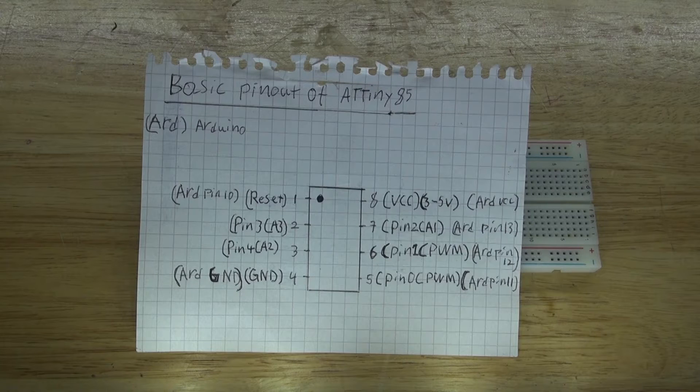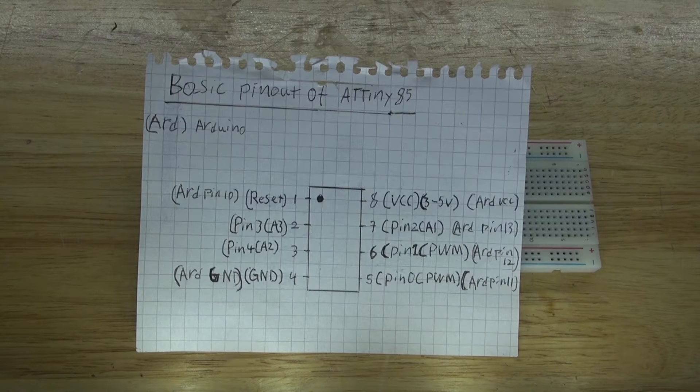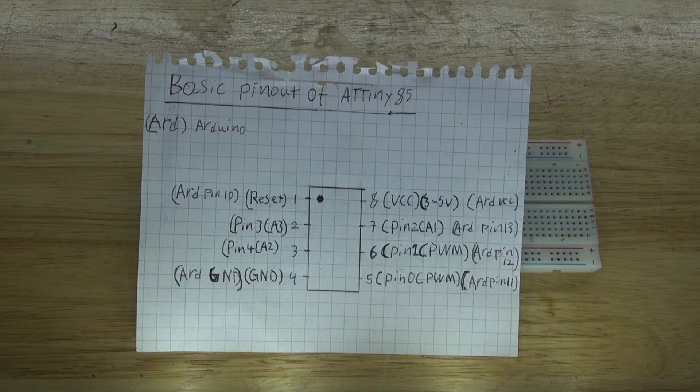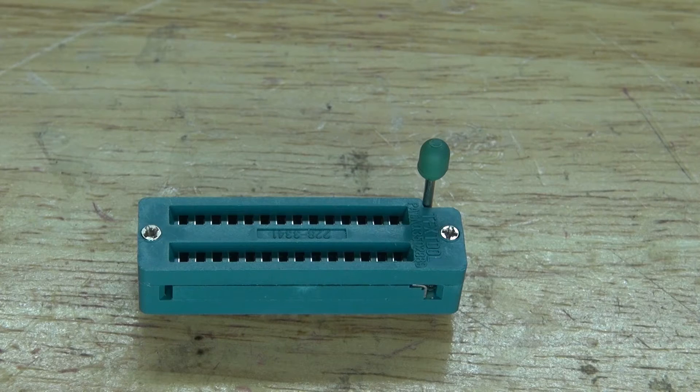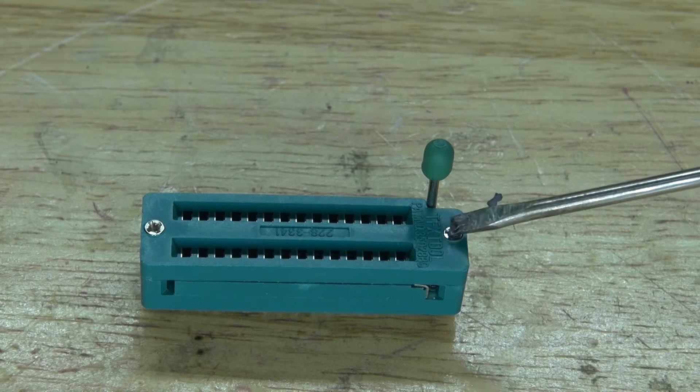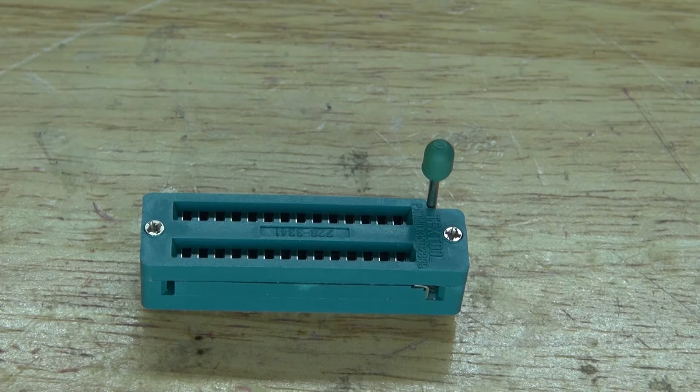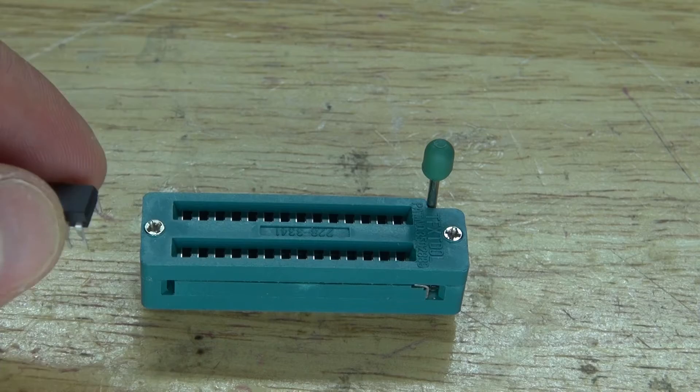This right here is the schematic of the basic pinout of an ATtiny85 microcontroller. Following this pinout of the ATtiny, you can wire the Arduino Nano to it to be able to program the ATtiny. And as you can see with this little component, it has 28 pins.